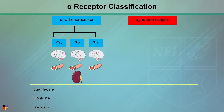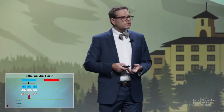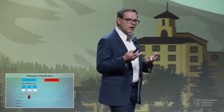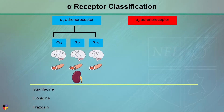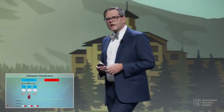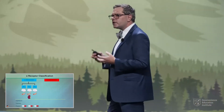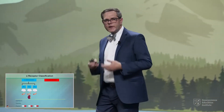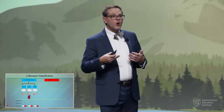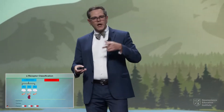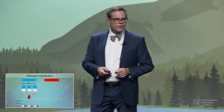With regard to alpha-1b, they're also located within the renal vasculature. And of course, the drug that we commonly use that modulates this system is prazosin. What's interesting is that when we look at the tolerability of prazosin in kids, it's very different from what we see in adults — we'll talk about that in another slide or so.